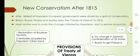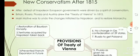New conservatism after 1815: after the defeat of Napoleon, European governments were driven by the spirit of conservatism. Britain, Russia, Prussia, and Austria drew up the Treaty of Vienna in 1815, with the main motive to undo the changes initiated by Napoleon and restore monarchies.